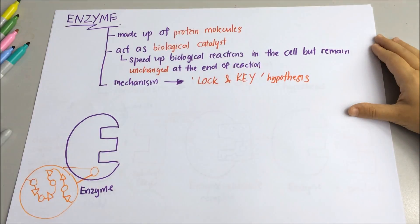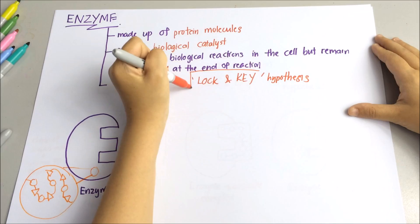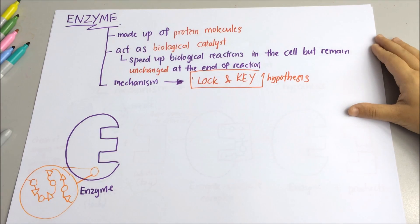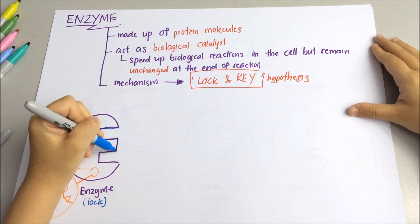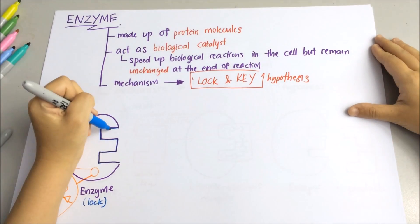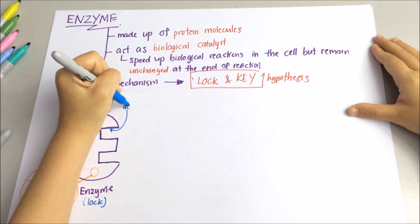The action of enzymes can be explained by the lock and key hypothesis. Let's see: enzymes will act as the lock because each enzyme molecule has a region with a very precise shape known as the active site.